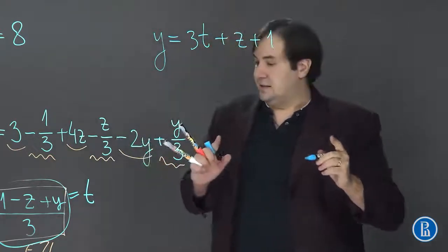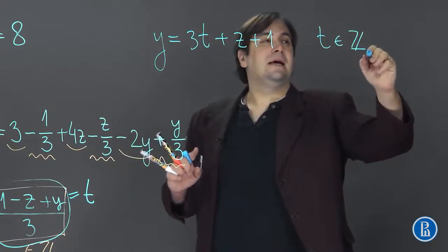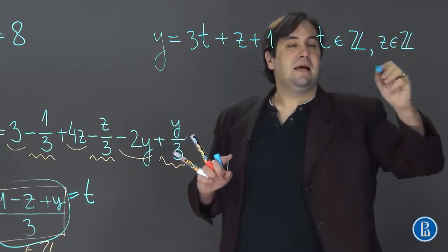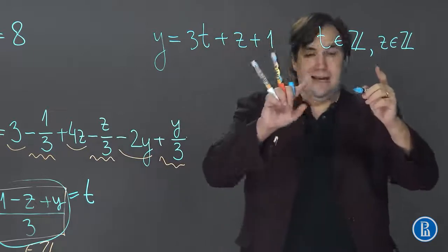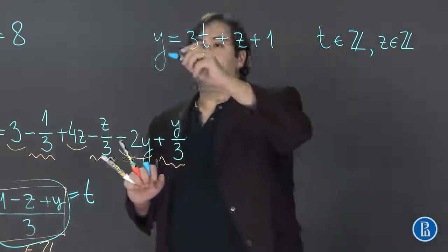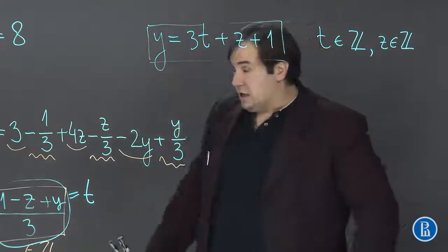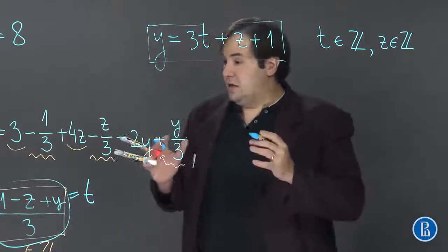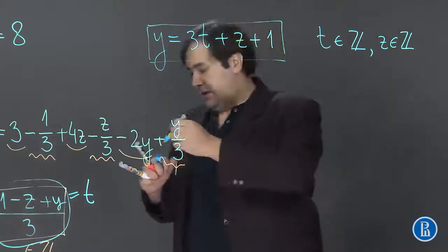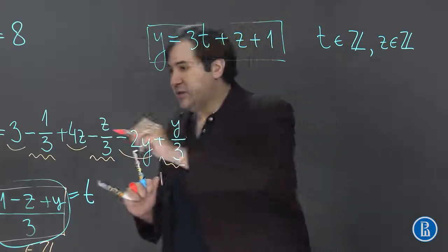Notice that t is an integer and z is also an integer. And for any integer t and z, y will also be an integer. So this is a part of the answer, of the solution of the equation. All that is left is to express x through t and z.